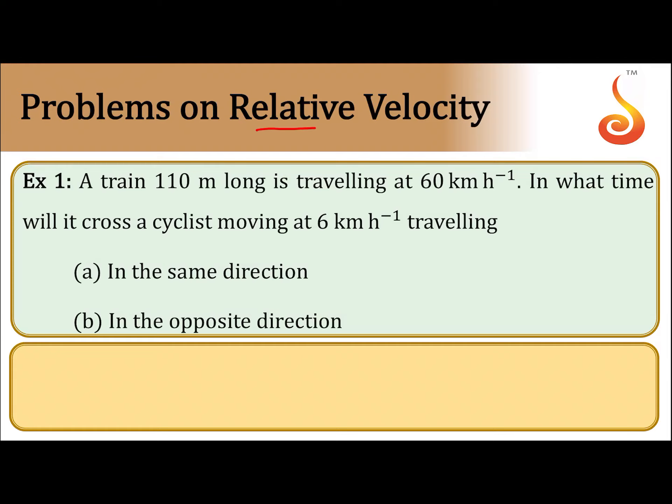Here is an example on relative velocity. The question reads: a train 110 meters long is traveling at 60 kilometers per hour. In what time will it cross a cyclist moving at 6 kilometers per hour — first, traveling in the same direction, and second, traveling in the opposite direction? Let us take it up.